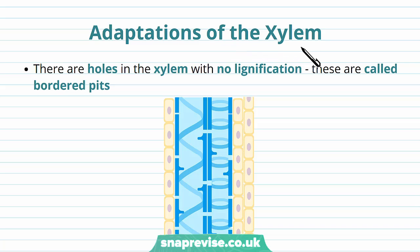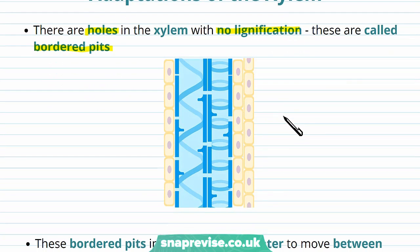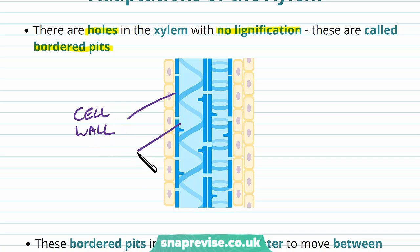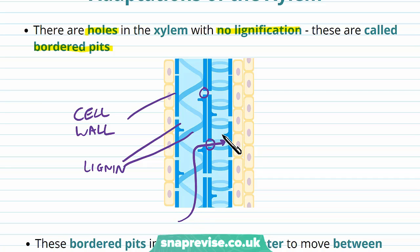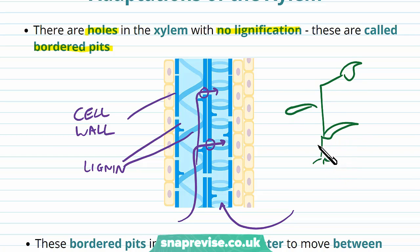As well as being formed from dead cells, the xylem has a few adaptations to be aware of. There are holes within the vessels that are not lined with lignin — they have not undergone lignification — and these are called the bordered pits. As vessels come into contact with each other, these holes allow water to transport from one vessel to another. Because the plant isn't a single straight tube — it has leaves and branches — water needs to branch off, like exiting a motorway. The bordered pits allow water to make lateral movements and change which xylem vessel it travels in.